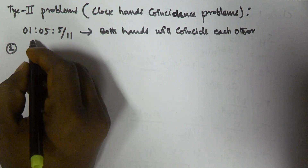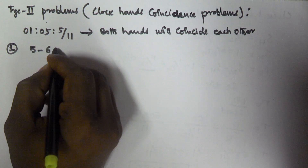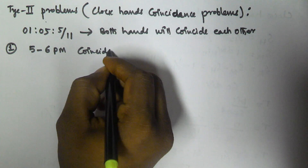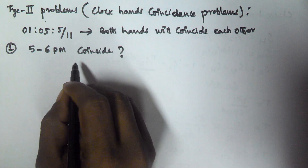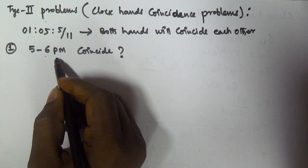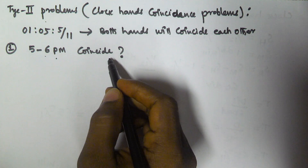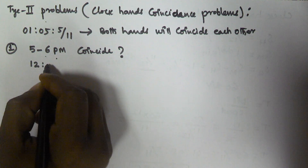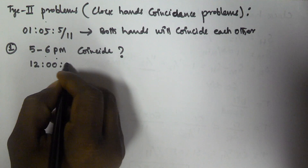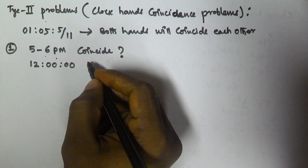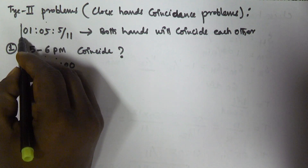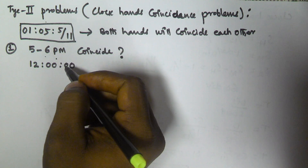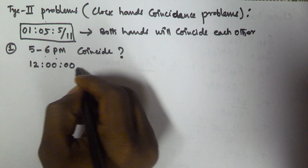For example: at what time between 5 to 6 PM will both hands coincide each other? We know at 12 PM both hands coincide, and after every 1 hour 5 minutes and 5/11 seconds both hands will coincide. So the first coincidence is at 12 PM.